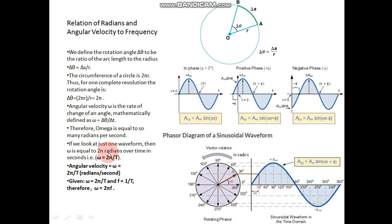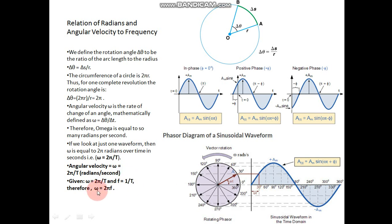Theta equals omega times t. So if we look at one complete waveform — meaning you have completed the whole circle — the angle subtended will be 2 pi, divided by the time period T. So omega equals 2 pi divided by T. Now T equals 1 over f, or f equals 1 over T. That is why omega becomes 2 pi times f.